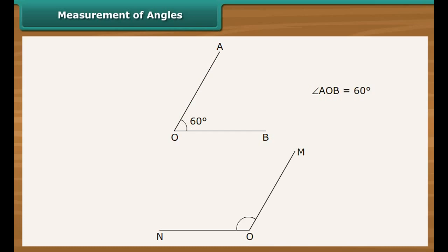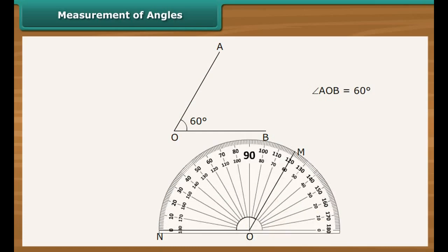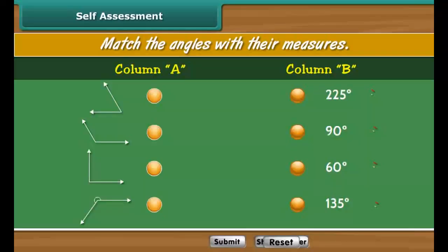To measure angle MON: place the protractor on ray OM. Ensure the horizontal line at the bottom coincides with ON and its midpoint rests on vertex O. Check the outer marking that coincides with ray OM — it is 120. Therefore, the measure of angle MON is 120 degrees.